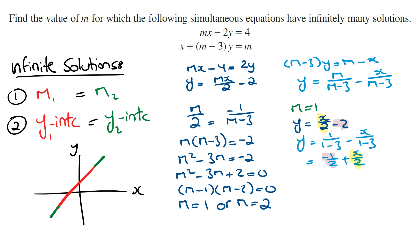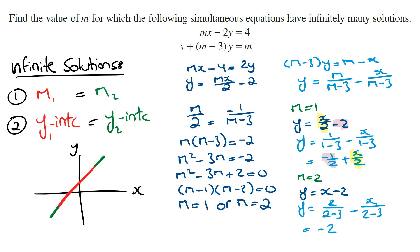So we now need to test m equals 2. Substituting m equals 2 into the first equation, we get y is equal to 2 times x divided by 2, which is just x, minus 2. Substituting m equals 2 into the second equation, we get y is equal to 2 divided by (2 minus 3) minus x divided by (2 minus 3). Simplifying, this is 2 divided by negative 1, which is negative 2, and then minus x divided by negative 1, which is plus x. The two lines now have the same gradient and the same y-intercept, satisfying both conditions.